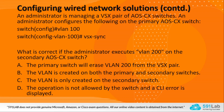The next question under configuring wired network solutions: an administrator is managing a VSX pair of AOS-CX switches and configures the following on the primary AOS-CX switch — under config mode, VLAN 100, then under the VLAN 100 context, the VSX-sync command is used. The question asks: what is correct if the administrator executes VLAN 200 on the secondary AOS-CX switch? We need to understand the functionality of the VSX-sync command.